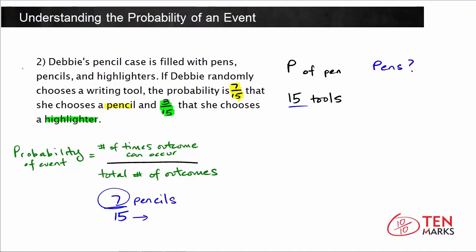Now we would apply the same logic to finding the number of highlighters. The probability of choosing a highlighter is three-fifteenths. Remember that 15 represents the total number of writing tools, and 3 represents the number of times this event can occur, or the number of highlighters that are actually in here. So we've got 3 highlighters.